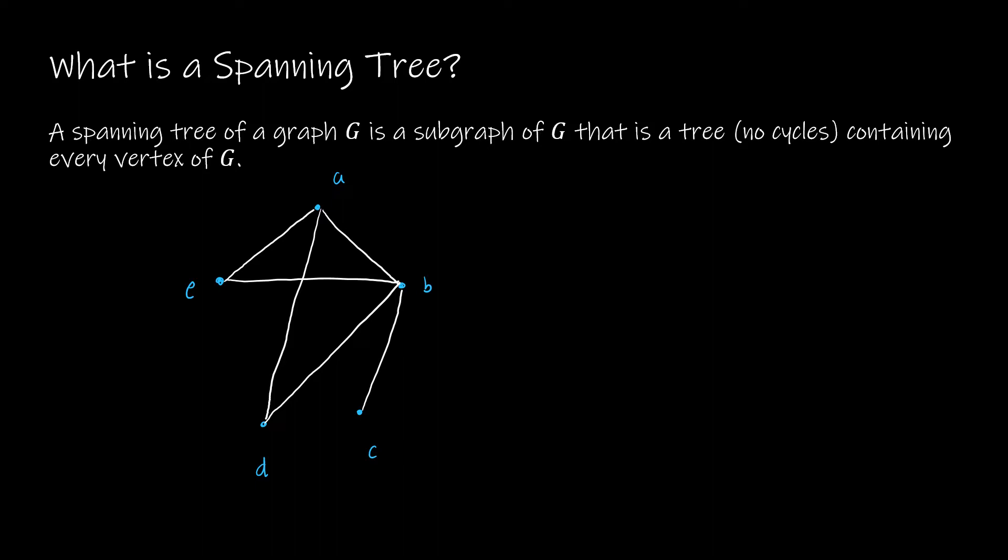So for instance, I could choose to connect A to E, and connect A to D, and connect A to B, and A doesn't connect directly to C, but I could connect B to C. So this would be an example of a spanning tree.